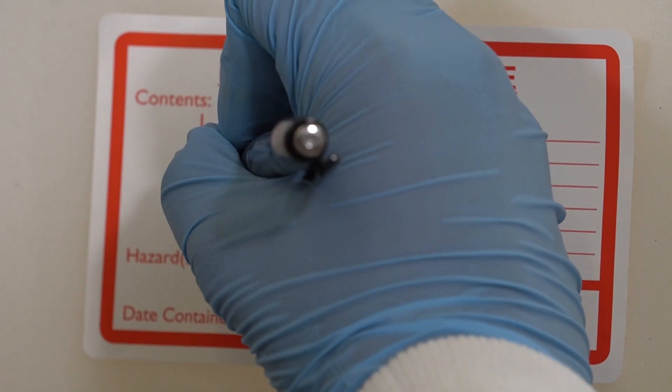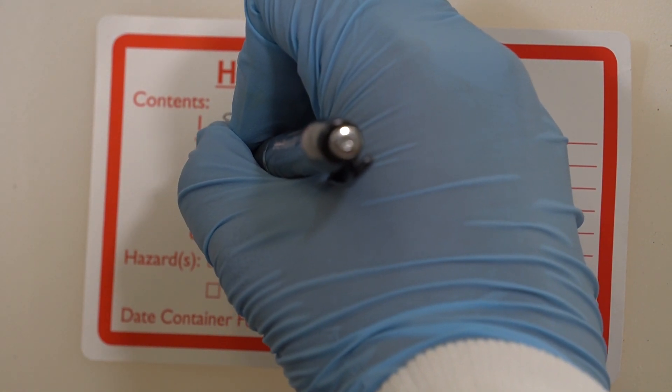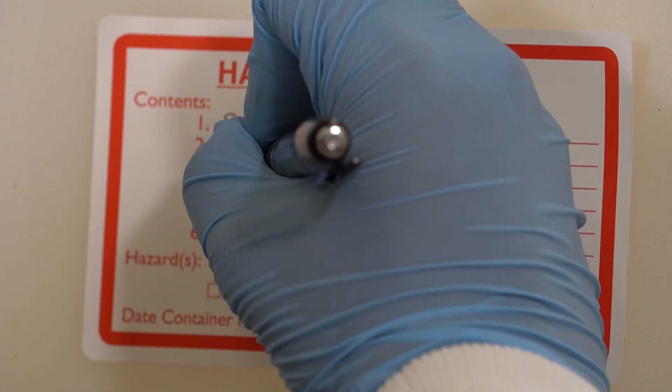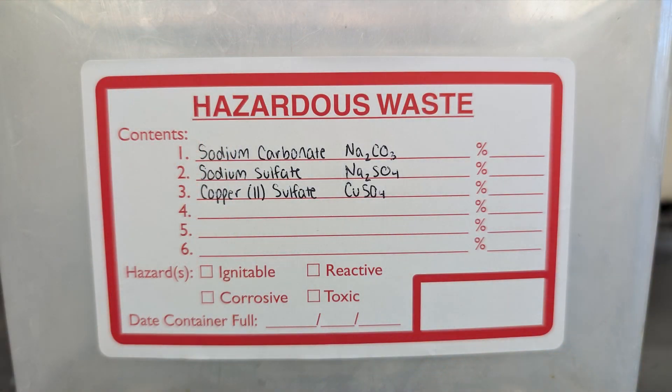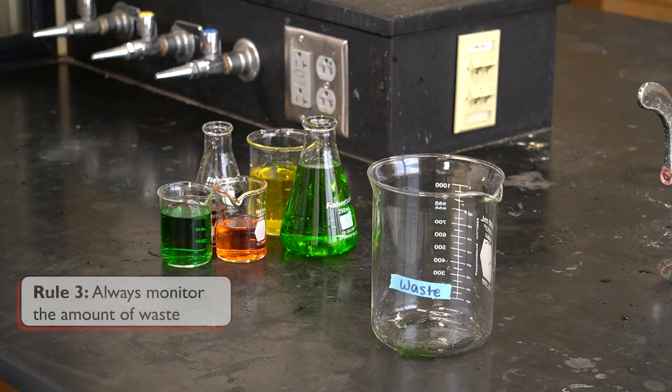If you decide that copper(II) sulfate is compatible with the other chemicals, you should write the chemical formula and the name of copper(II) sulfate on the waste label after you add it. Rule number three: